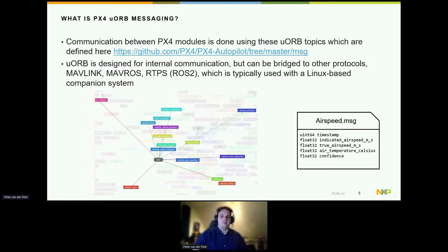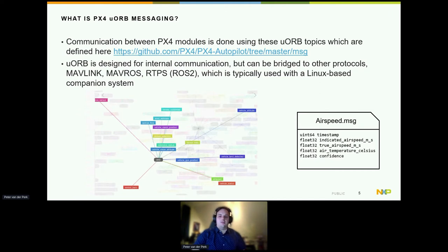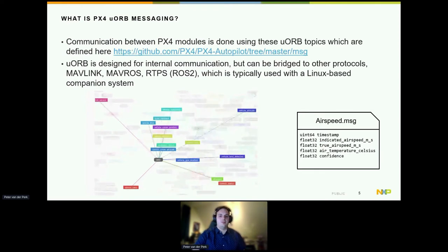Typically, this is used to connect a PX4 autopilot to a Linux-based companion system, but not really for a distributed architecture. The picture here shows an example of an airspeed sensor message — it's a strict definition of different fields of data that gets published on the uORB bus.